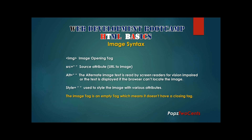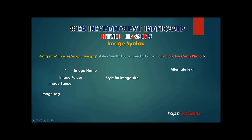Image syntax: creating an image link uses the following tags and attributes. The image tag is used; the source represents the URL to that image; the alt attribute is the alternate text displayed if the browser cannot find the image, or read aloud for the vision impaired; and the style attribute contains various properties that can be used with images. Note that the image tag is an empty tag — it has no closing tag. The style attribute sets the width and height, in this case 158 by 125 pixels, and the alt text reads 'Pop's Two Cents Photo'.